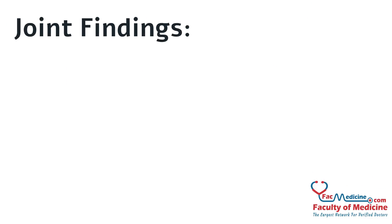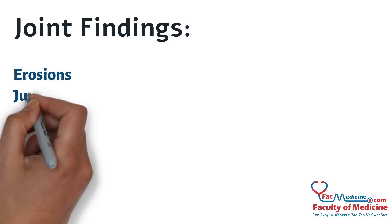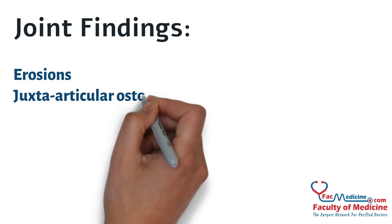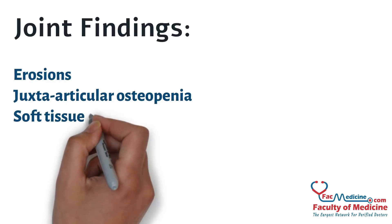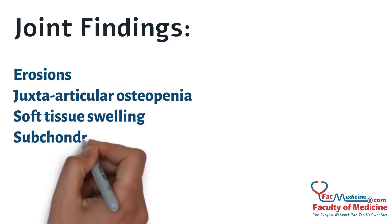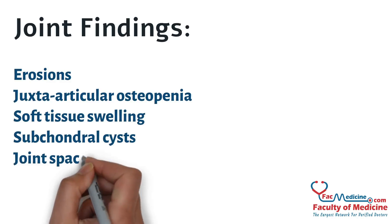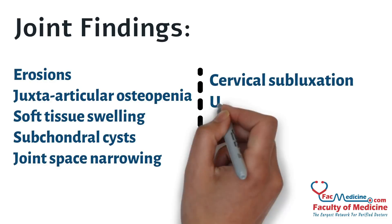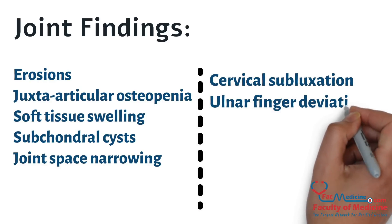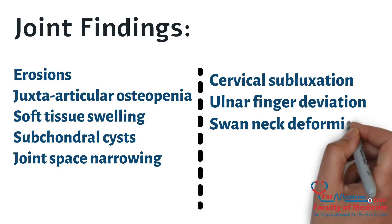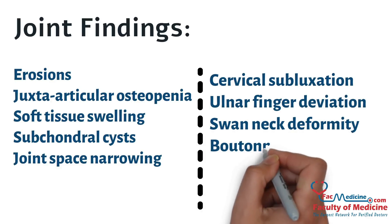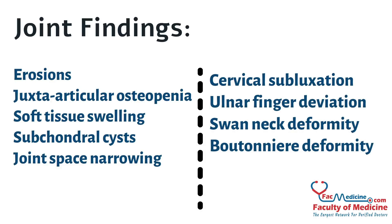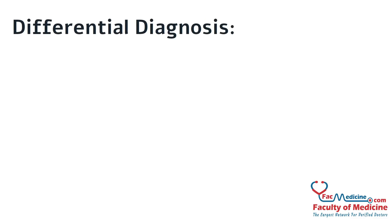Joint findings: Erosions, juxta-articular osteopenia, soft tissue swelling, subchondral cysts, joint space narrowing, cervical subluxation, ulnar finger deviation, swan neck deformity, and Boutonnière deformity.